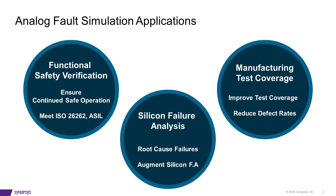So why do we need analog fault simulation? There are three major applications for analog fault simulation. The first application is functional safety verification. Analog fault simulation can be applied to aid in the analysis of a circuit's functional behavior and robustness to ensure continued safe operations.